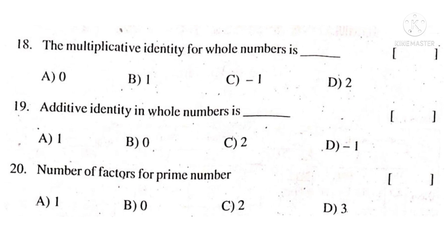Eighteenth question: the multiplicative identity for all numbers is. A number which when multiplied by another number does not change the identity of that number or the value of that number. Here the number 1 is the multiplicative identity. The correct choice is B. Additive identity in whole numbers is - a number which when added to another number does not change the identity of that number. Here the number 0 is called the additive identity. The correct choice is B.